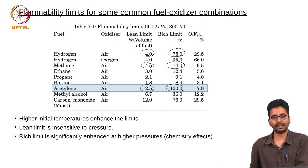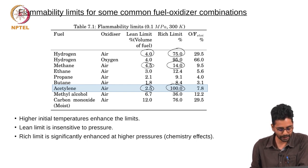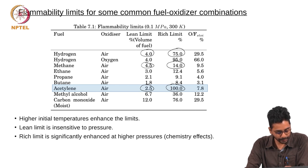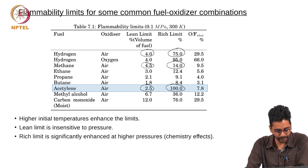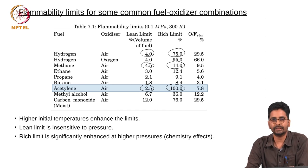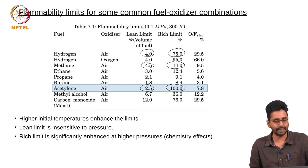Acetylene can exothermically decompose and form a flame even in the absence of air. Questions similar to what we asked about flame speed can also be asked about flammability limits — what is the effect of initial temperature and what is the effect of initial pressure? Higher initial temperatures enhance the limits through changes in flame temperature and reaction rate. The lean limit seems insensitive to pressure, but the rich limit is significantly enhanced at higher pressures due to kinetic effects.